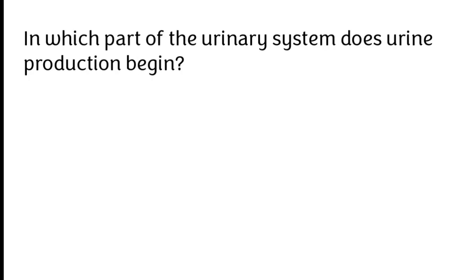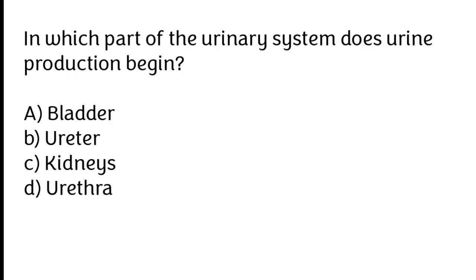In which part of the urinary system does urine production begin? A) Bladder, B) ureter, C) kidneys, D) urethra.